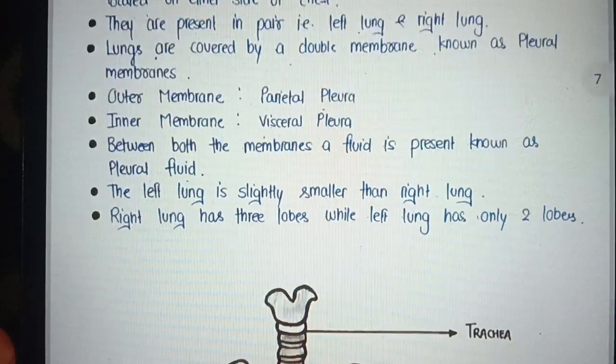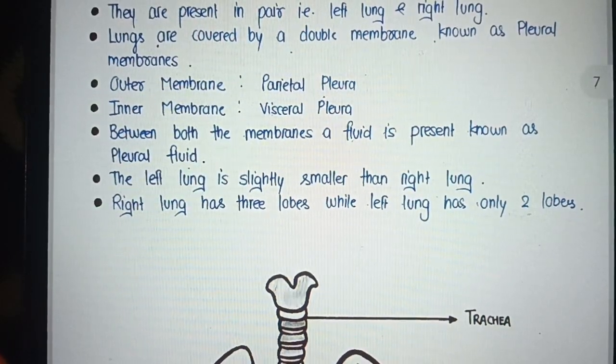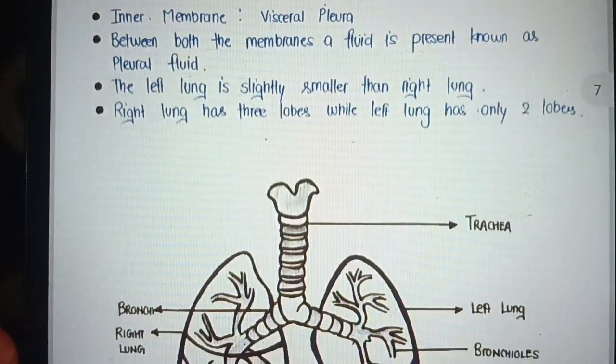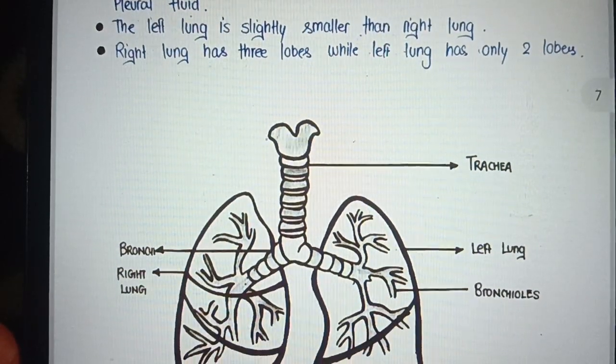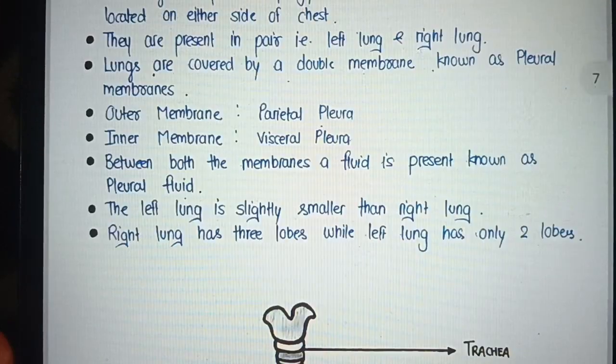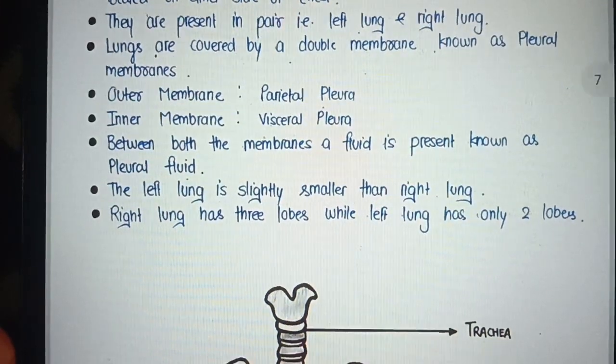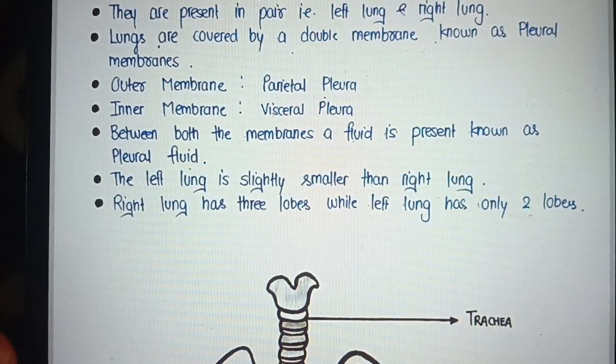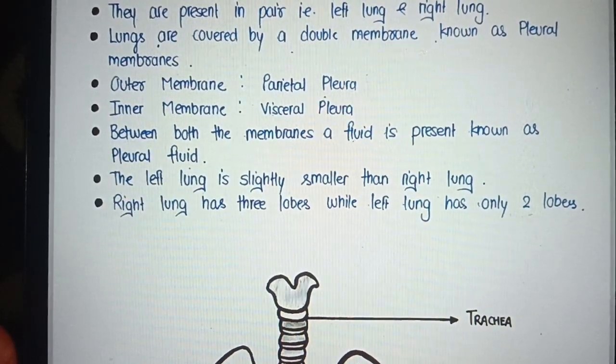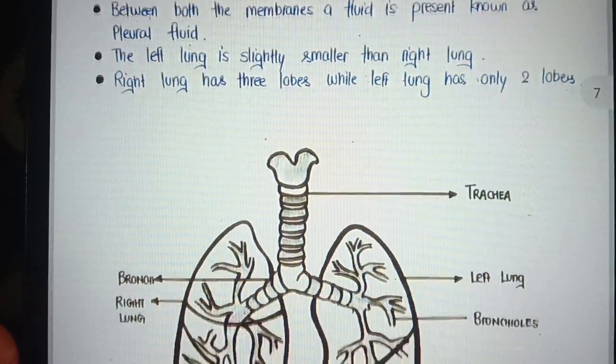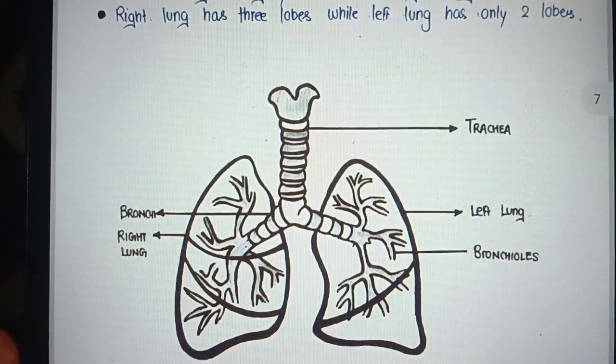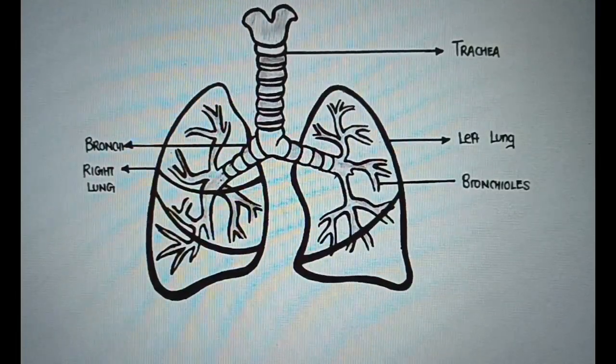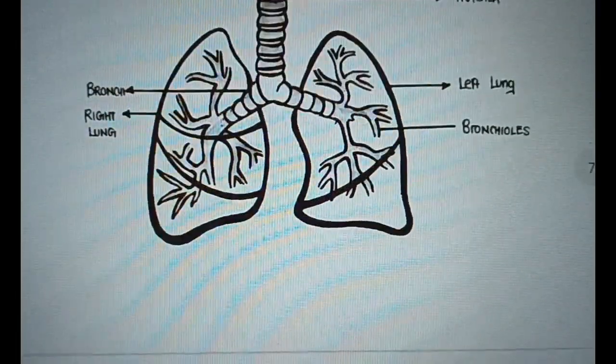Lungs. Lungs are the principal organ of respiration. They are a pair of spongy, air-filled, cone-shaped organs located on either side of the chest. They are present in pairs: left lung and right lung. Lungs are covered by a double membrane known as pleural membranes: outer parietal pleura and inner visceral pleura. Between both membranes, a fluid is present known as pleural fluid. The left lung is slightly smaller than the right lung. The right lung has three lobes while the left lung has only two lobes.